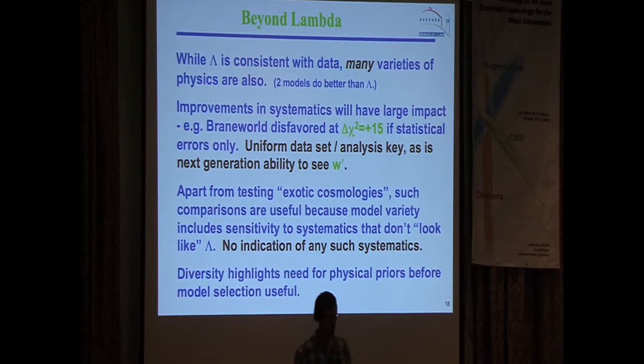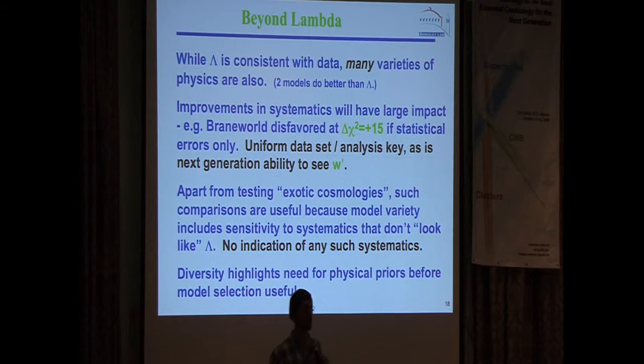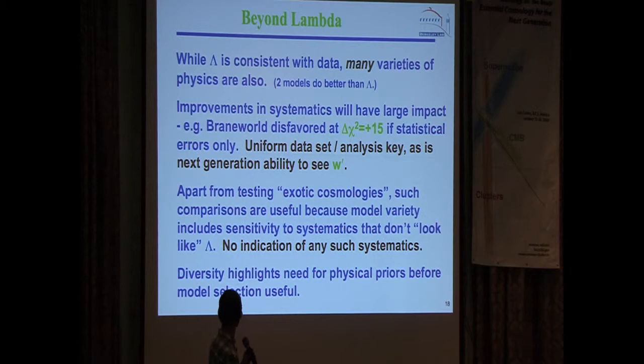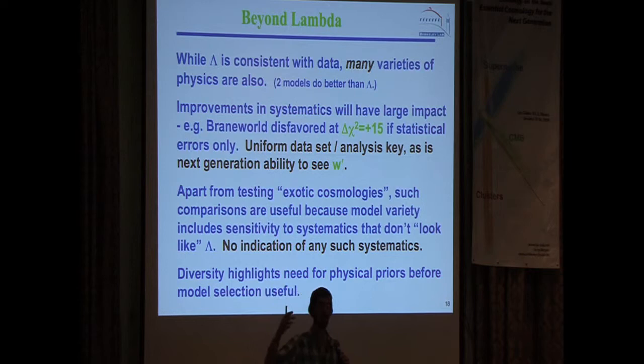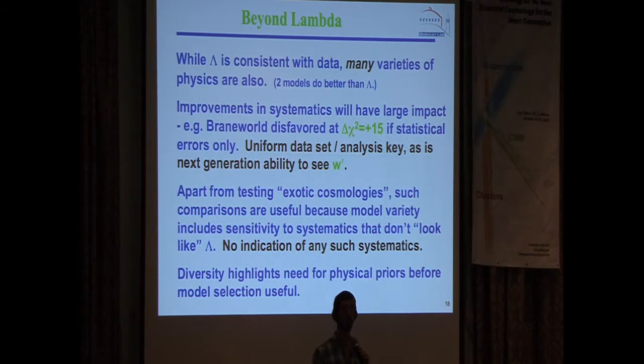Systematics are extremely important — you have to be able to see w-prime. And there are lessons for experimentalists: as you move away from the vanilla models, you've got to rethink what your experiment is seeing. Do you have the complementarity? The way that systematics influence the results changes as you go to different fiducial models. The difference between supernovae and BAO is where they're anchored: supernovae are anchored to low redshift, whereas BAO are anchored to the sound horizon at high redshift, giving a different combination of parameters. Supernovae measure distance relative to the distance at low redshift, which is independent of cosmology; BAO measure distance relative to the sound horizon size.